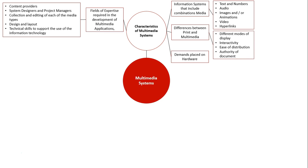The differences between print and multimedia basically involve the different modes of display — one is paper-based and the other is usually displayed on a monitor or device. Interactivity with print media is limited, but with multimedia we can have much more interactivity between the user and the application. There is also the ease of distribution — we can email out an electronic multimedia document, whereas a paper-based document may need to be mailed out or distributed by hand, which can be very time-consuming. Then there is the authority of the document — who owns it, how does the author get recognized as the owner, which also links into copyright.